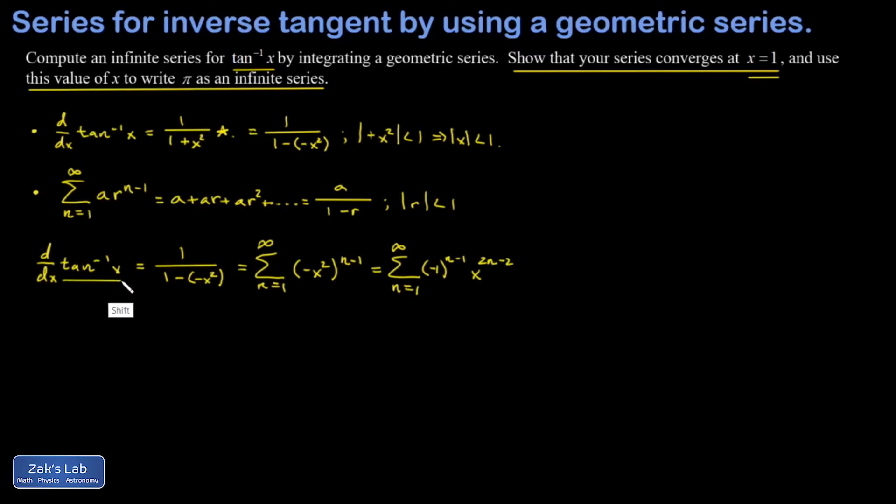The derivative of the function that we're interested in turns out to be equal to this infinite series. Now all I do is just integrate both sides. That would give me an inverse tangent of x on the left hand side. It also gives me an arbitrary constant of integration. And then I just integrate each term in my infinite series. So I add one to the exponent on x—this is just the power rule—and I divide by that resulting exponent.